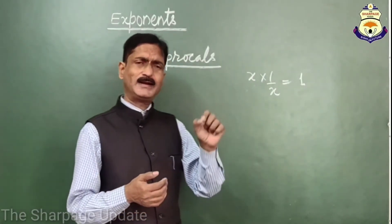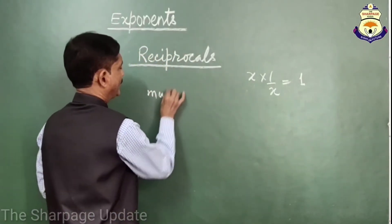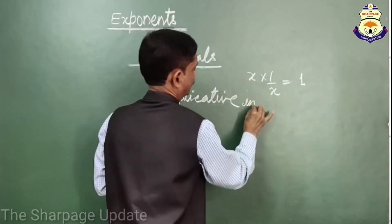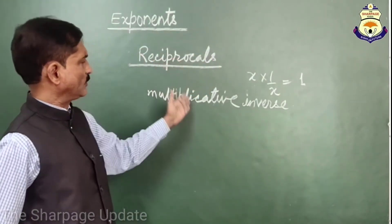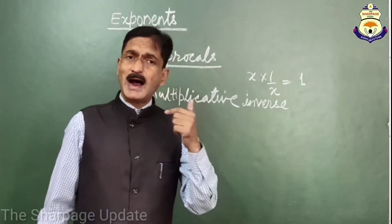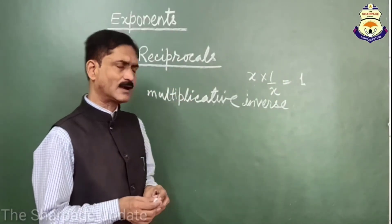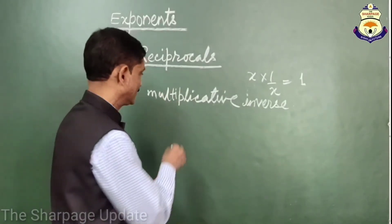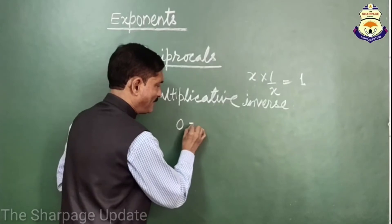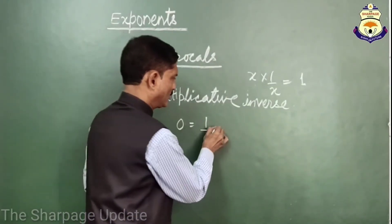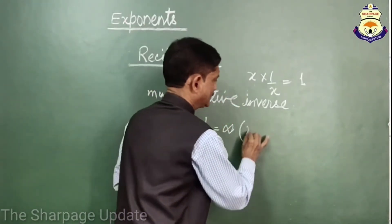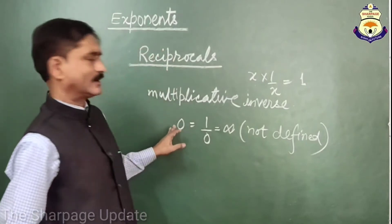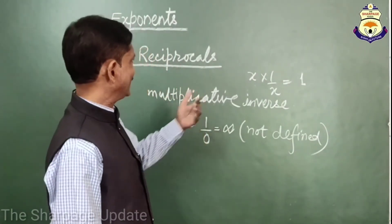Now friends, the reciprocal of any number is also known as the multiplicative inverse. There is no reciprocal of 0, because the reciprocal of 0 would be written as 1/0, and the value of 1/0 is equal to infinity, which is not defined. So the reciprocal of 0 does not exist.